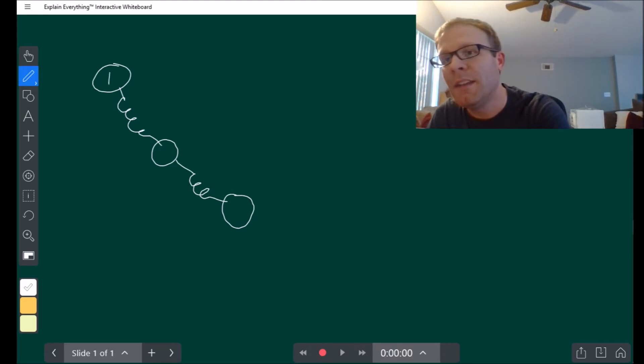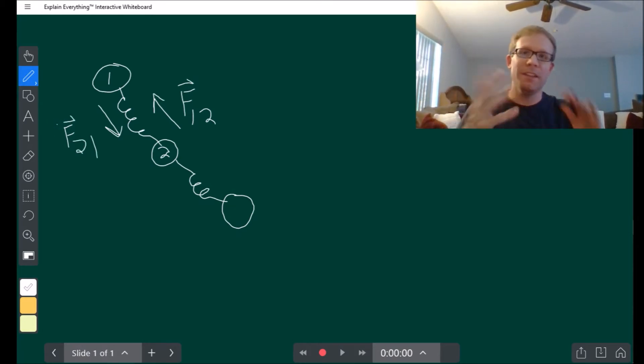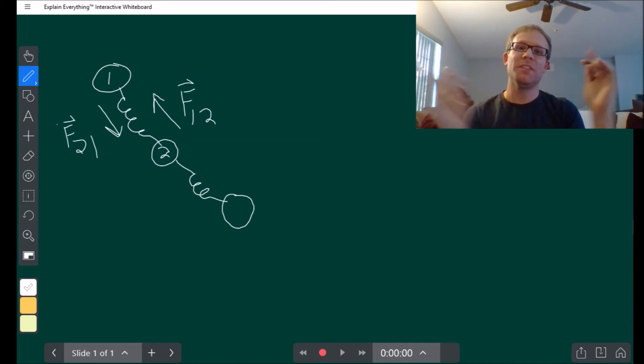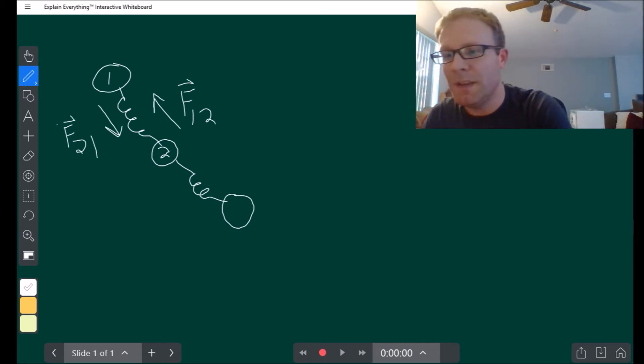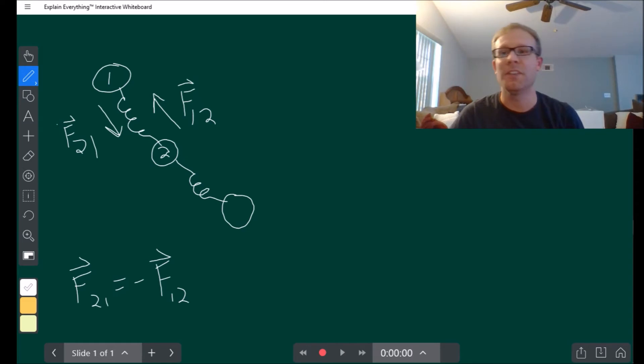So for example suppose you've got two elements, call them one and two, there's going to be a force between one and two that pulls this one this way. Let's call that force of one on two, and then back the other way, the force of two on one. You'll notice that the numbers flip there because the direction is flipping. This is really just an example of Newton's third law that the force of two on one is equal to the negative of the force of one on two. They're the same magnitude just opposite directions.